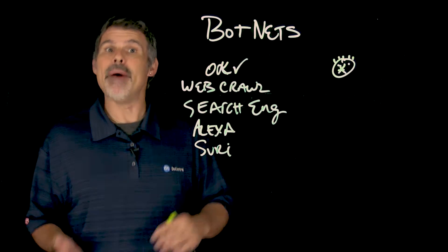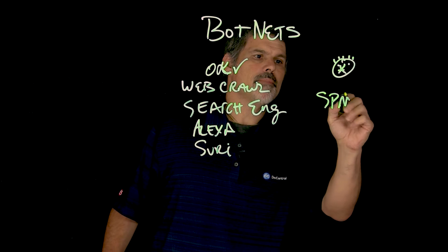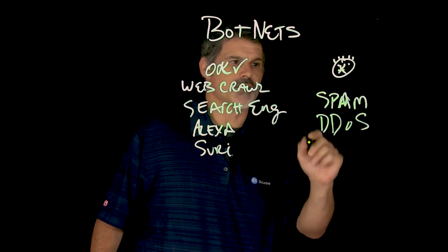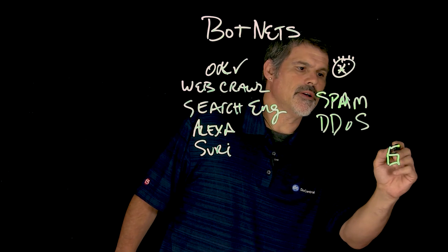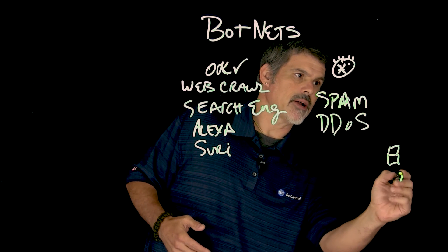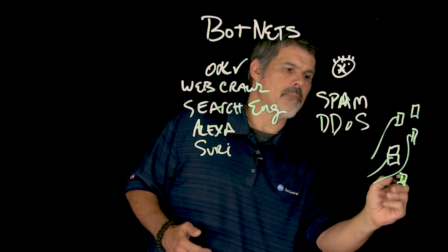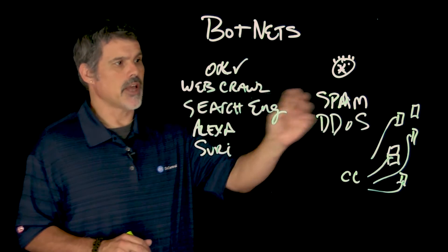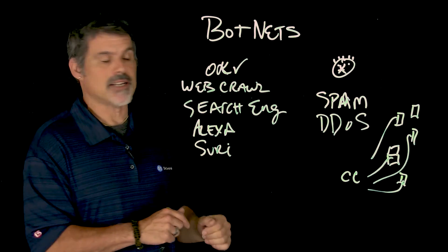Some of the things that bad bots do include spam, or DDoS — distributed denial of service attacks. In these instances, your computer gets infected, and once it's infected, along with a whole bunch of other infected computers, they all dial back into the command and control center. From the command and control center, they control all of these bots because that program is designed to call back to the control center.